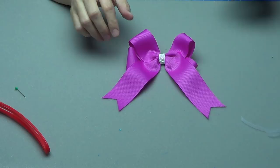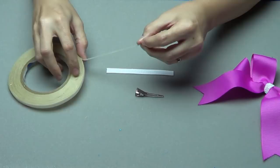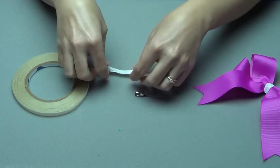Okay, the bow is almost done. We just need to add a clip to it. I'm going to add a partially lined single prong alligator clip to the back of the bow. I'm using four and a half inches of three-eighths inch grosgrain ribbon and D670 double-sided tape.